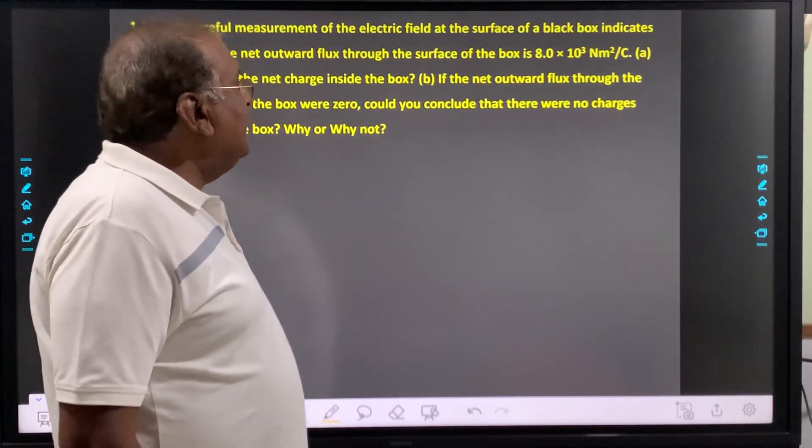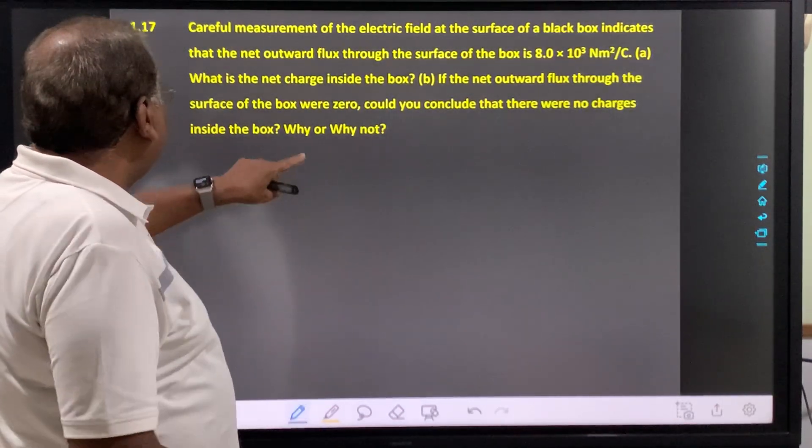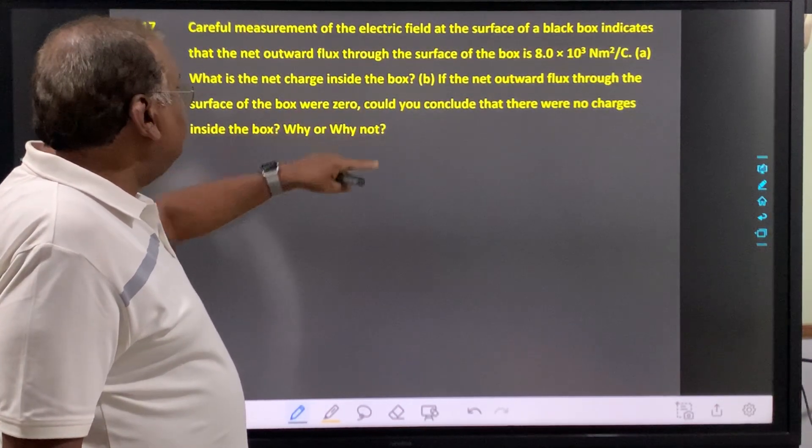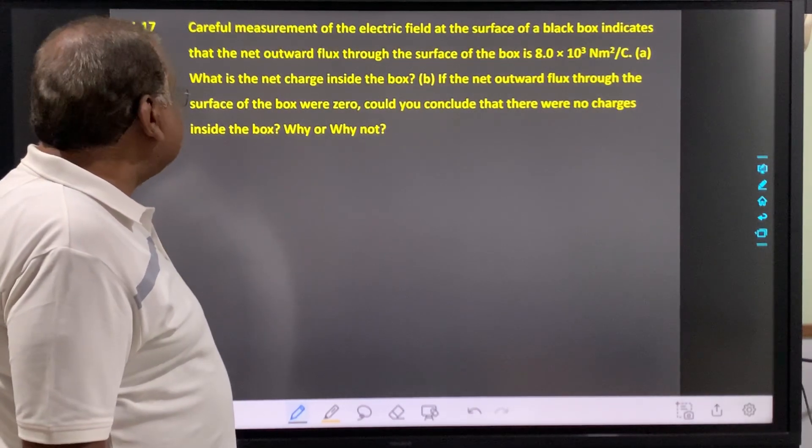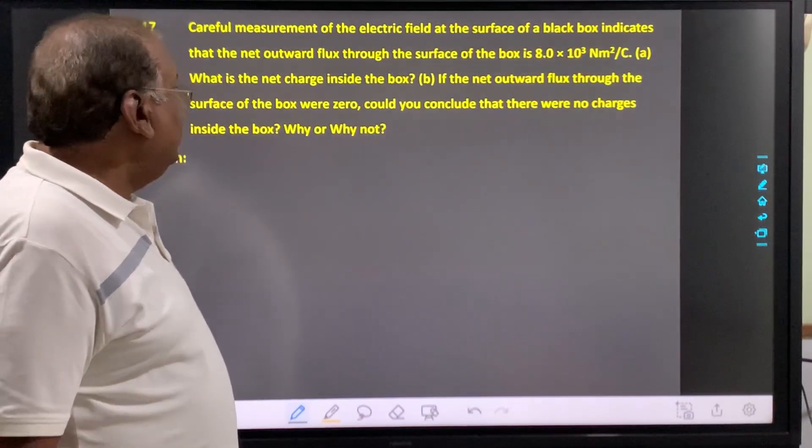Question B: If the net outward flux through the surface of the box were zero, could you conclude that there were no charges inside the box? Why or why not?